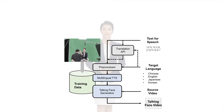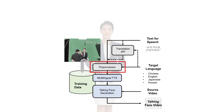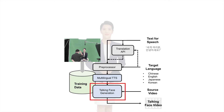Now let's go over the system pipeline. First, we translate the input text into the target language using the Google Translate API. Then we pass the text through the preprocessor module, which converts the text into a sequence of phonemes. The multilingual text-to-speech module then receives the phonemes and outputs the speech waveform in the target speaker's voice. Finally, we take the speech waveform and the source video and run them through the talking face generation module. The final output video would look like this.